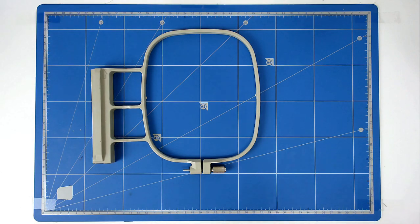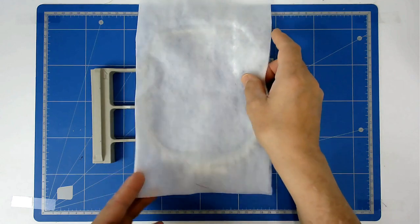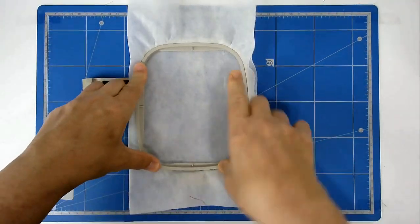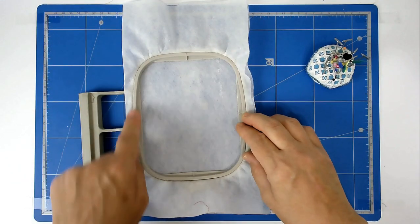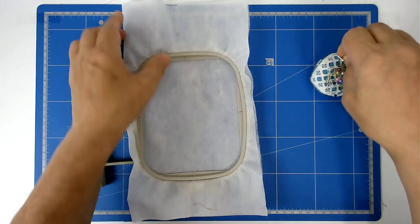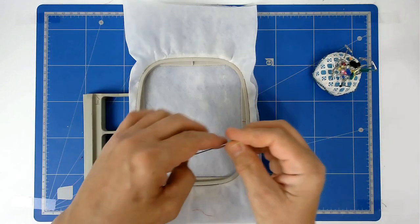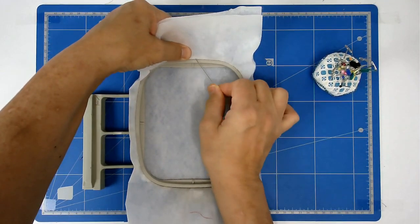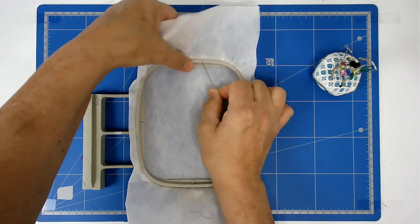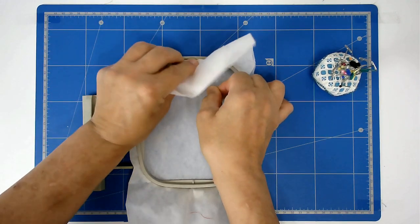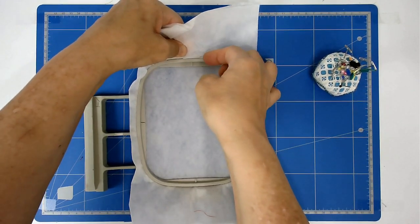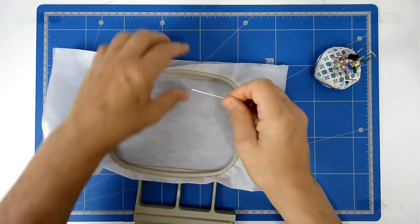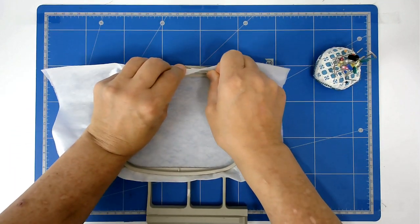You're going to start off by hooping your two layers of wash away stabilizer. I like to pin around the top edge of my hoop so that my stabilizer stays nice and taut in the hoop. Take your pin, rest it on top of the inside hoop frame, push it through your stabilizer and then bring it back around and through. You're going to do that on all four sides. The bigger your hoop, the more pins you will use.